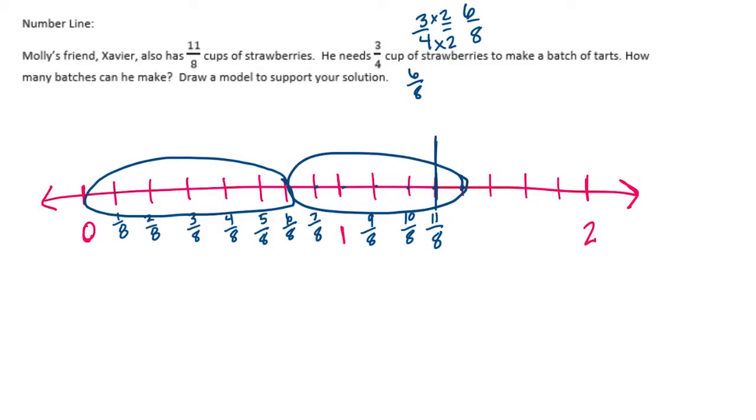Remember my 11 eighths stopped right there. So I have 1, 2, 3, 4, 5 out of 6. So we get 1 and 5 sixths. What were we talking about? How many batches of tarts?